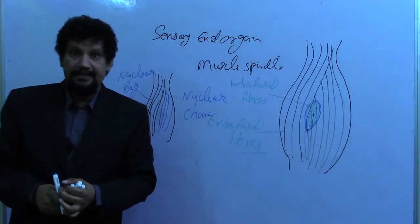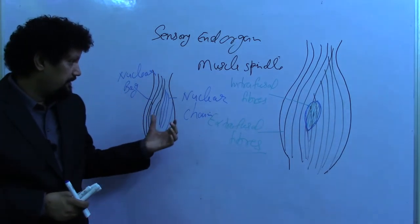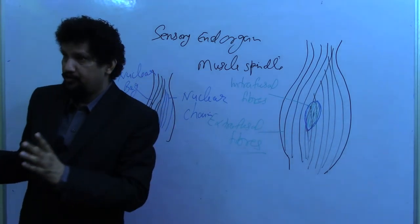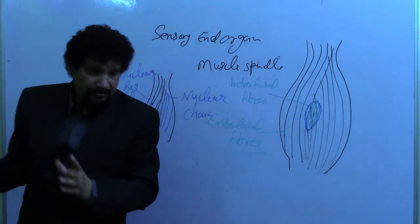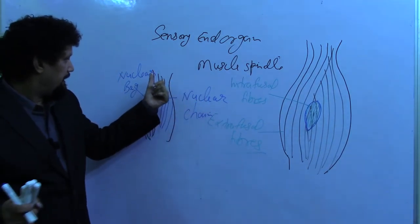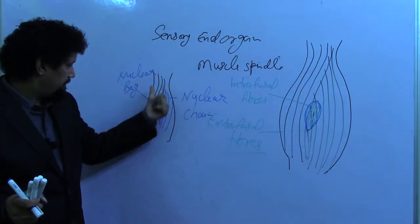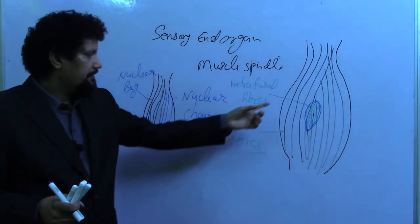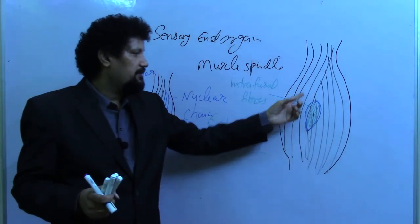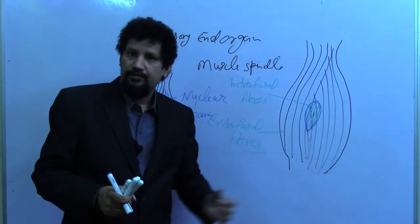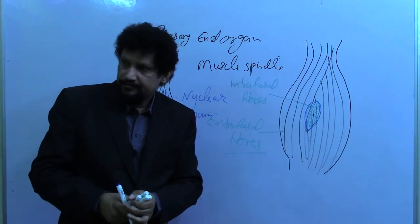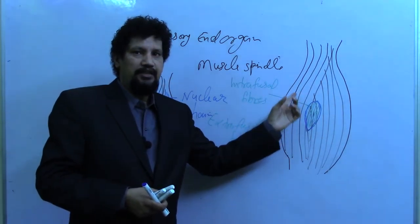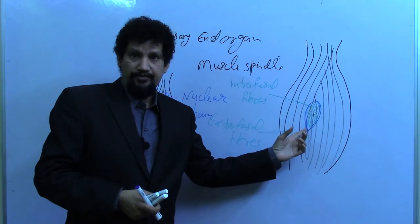Inside the muscle spindle, covered by the capsule, there are nuclear bag fibers and nuclear chain fibers. The large nuclear bag fibers are in direct contact with the extrafusal fibers to help balance the contraction of extrafusal and intrafusal fibers.